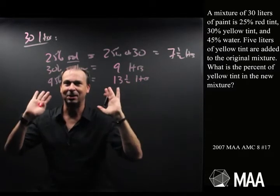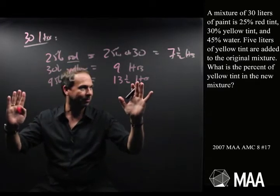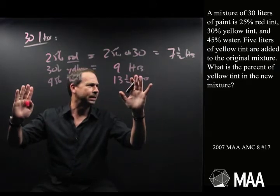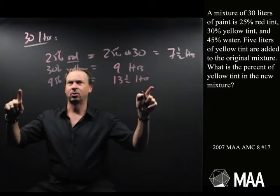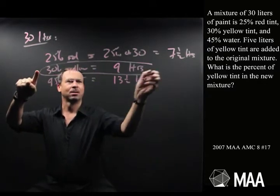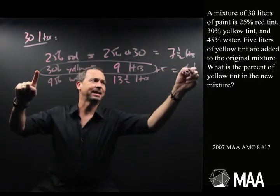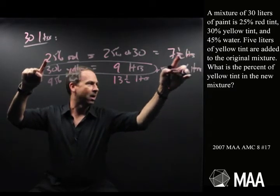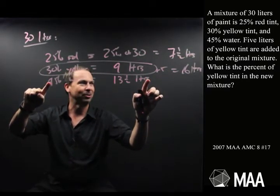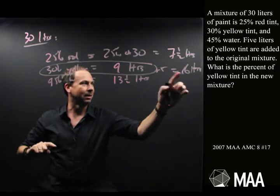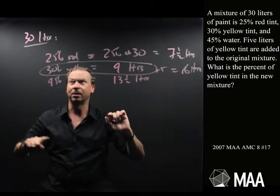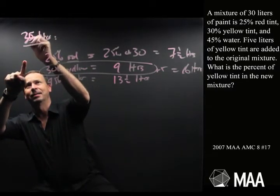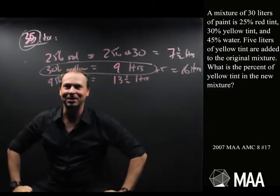Alright, that's the original setup. The question says 5 litres of yellow tint are added to the mixture. So to the yellow — which was 9 litres — we add 5, and it's now 14 litres. The red stays the same at 7 and a half, the water stays the same at 13 and a half. It's not 30 litres anymore — it's now 35 litres total. That's the new situation.